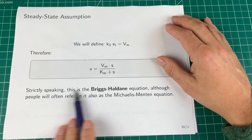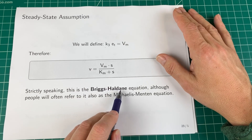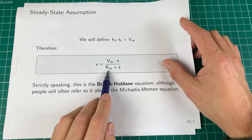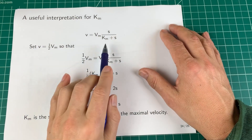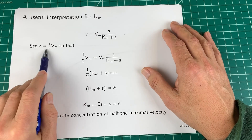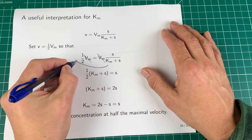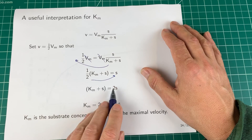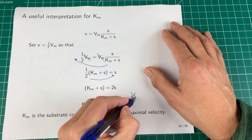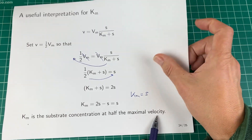If you see K_m in the denominator, you know it's the Briggs-Haldane equation. How do we interpret K_m? In the rapid equilibrium assumption, the denominator was simply the dissociation constant KD. To understand K_m, take the rate law and set V = half of V_M. The V_M terms cancel, and rearranging gives K_m = s. So K_m is the substrate concentration at half the maximum velocity.